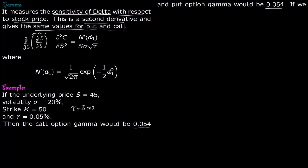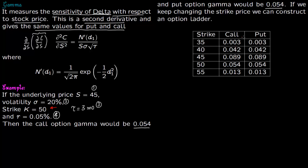Again, as before, you keep the underlying price, volatility, tau, and risk-free rate as constant, and you keep changing the strike price. If you keep changing the strike price, you will get different values for call and put gamma. Notice that at all places, the call and put are equal to each other for gamma. Gamma is same for call and put.